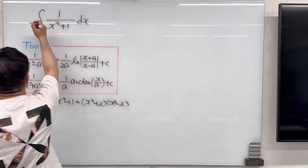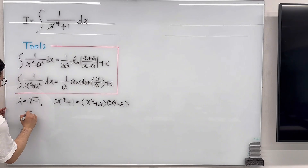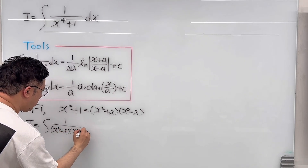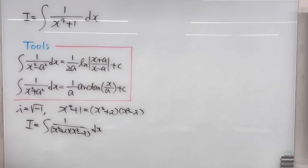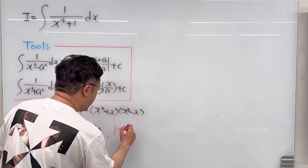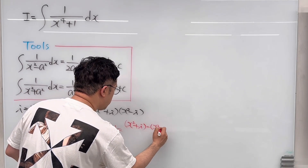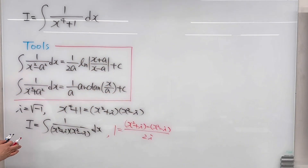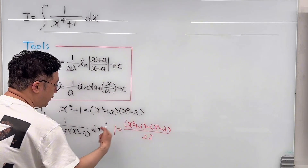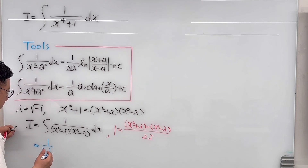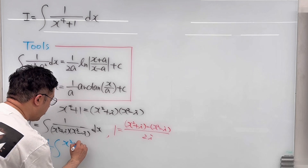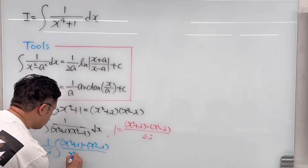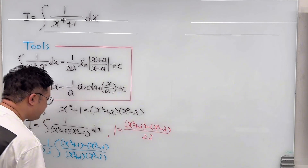Using this, let me call this integral I. We rewrite I as the integral of 1 over (x² + i)(x² − i) dx. Here's a little trick: the 1 in the numerator is the same as (x² + i) − (x² − i) over 2i. Applying this, we can pull 1 over 2i out, giving us 1/(2i) times the integral of [(x² + i) − (x² − i)] over (x² + i)(x² − i) dx.